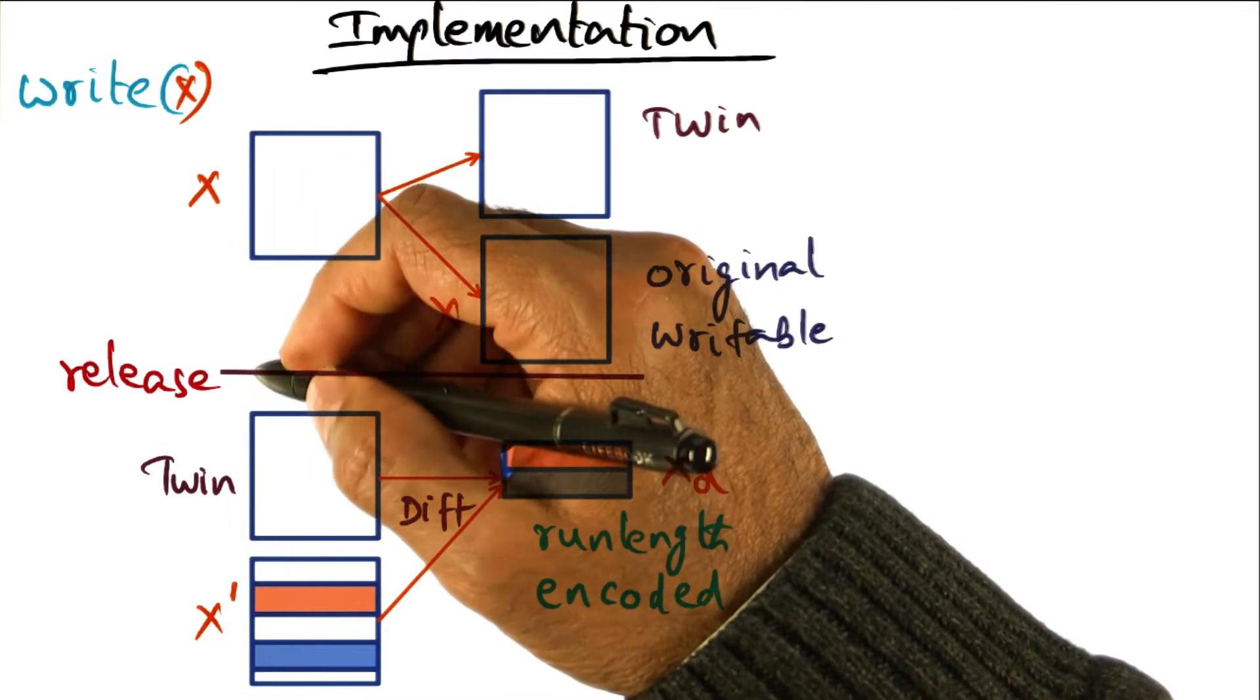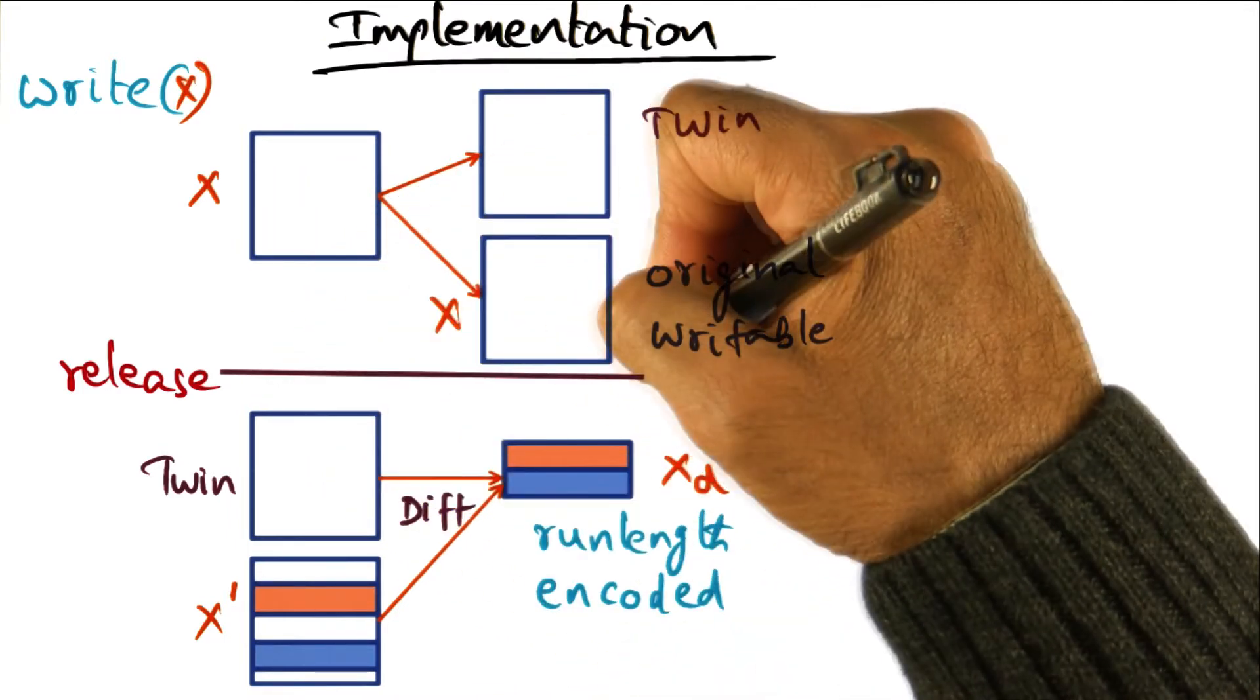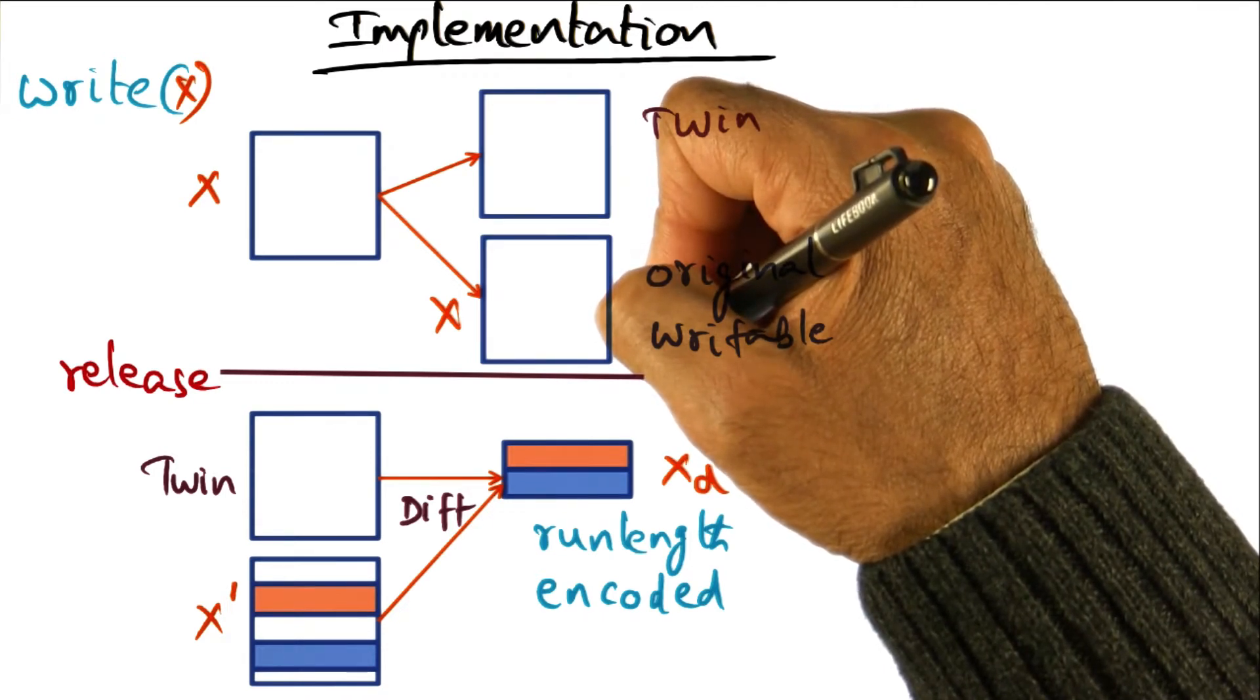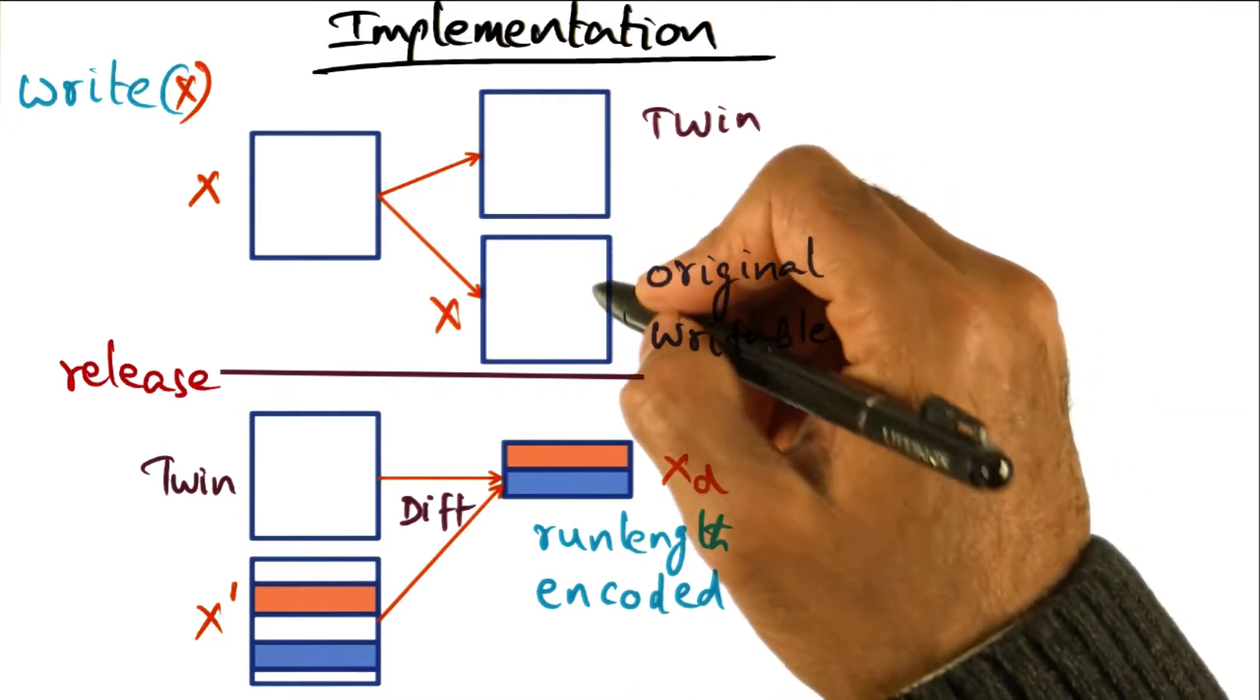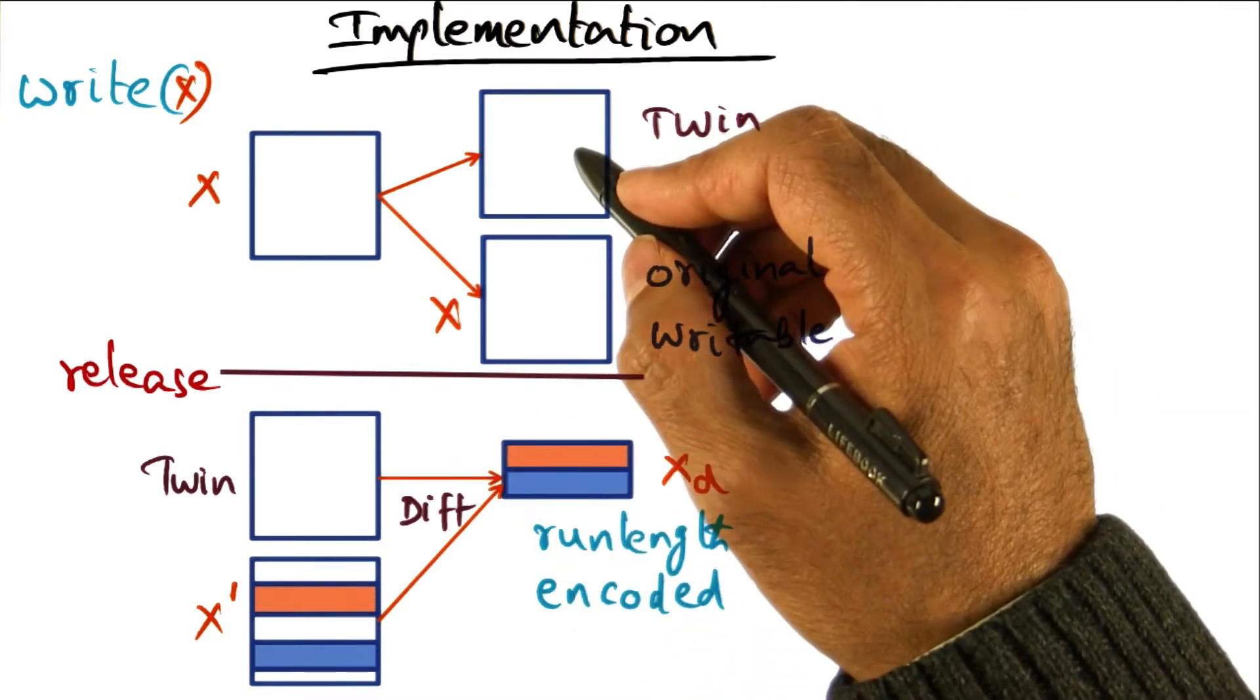So the thread reaches the release point. When the thread reaches the release point, what the DSM software is going to do is compute the diff between the changes that have been made and the original version.